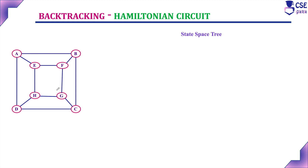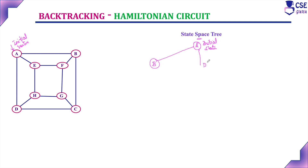For this given graph, we need to construct the state-space tree to implement Hamiltonian circuit. Initially, start with the initial vertex. Here we will consider the initial vertex as starting vertex A. Start with the initial vertex A — this is the initial state and the root of the state-space tree. Considering this graph, A is connected to three vertices: B, E, and D. So at the next level, we can consider the path through A to B, D, and E.